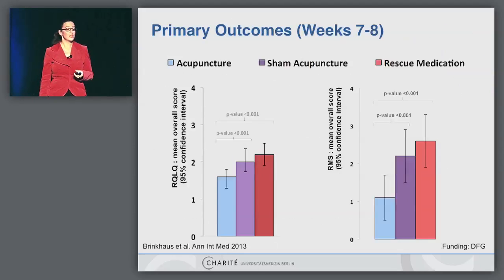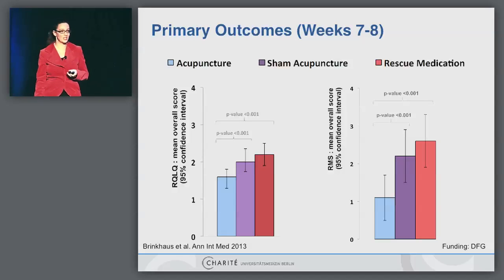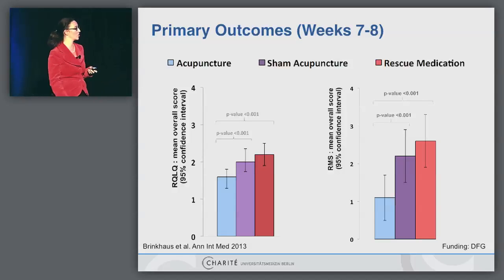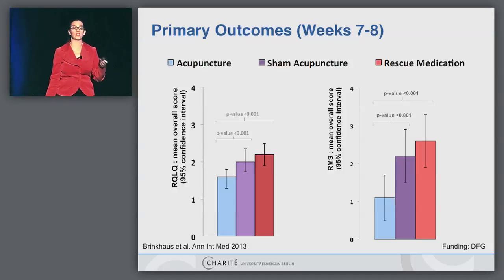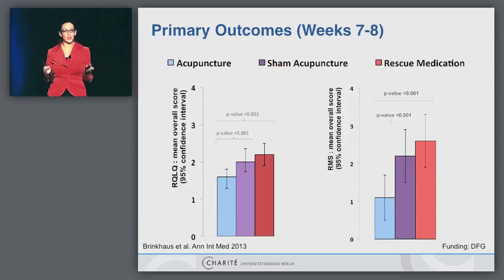The trial had two primary outcome measures: the Rhinitis Quality of Life Questionnaire and the rescue medication score obtained from patient diaries. Higher values mean worse results. We found significant differences for both primary outcomes — adjusted alpha for two primary outcomes — between acupuncture and rescue medication, and also between acupuncture and sham acupuncture. I'm very interested to see whether the other unpublished trials come up with similar results. Notably, allergic rhinitis is a totally different disease from chronic pain, so mechanisms may be entirely different.